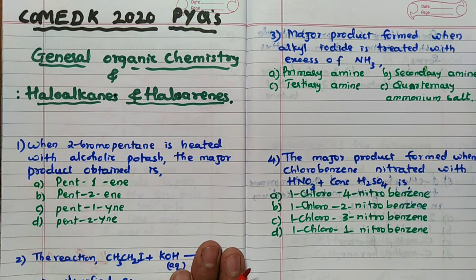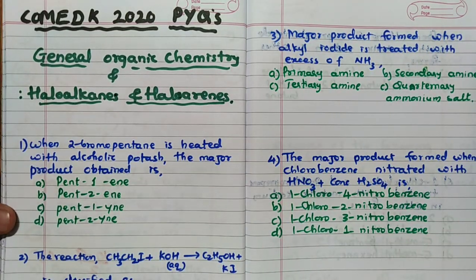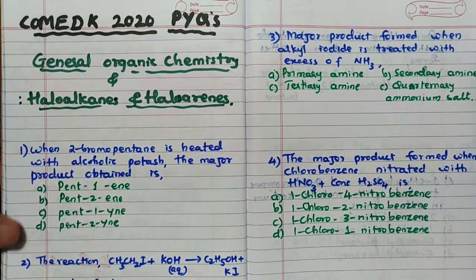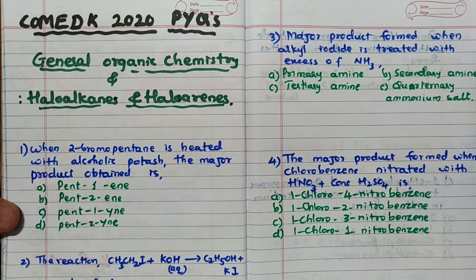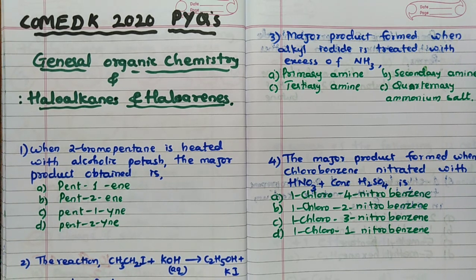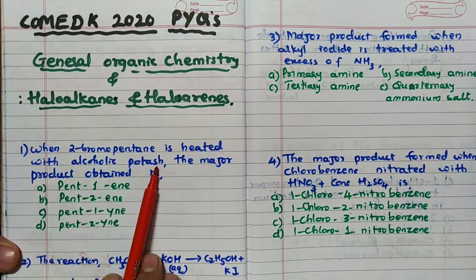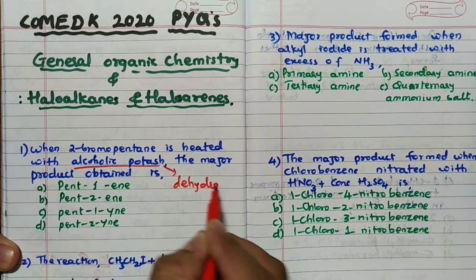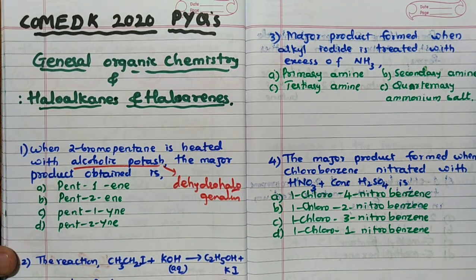Be ready for the whole class 11 and class 12 syllabus. Today in General Organic Chemistry and Haloalkanes and Haloarenes, this is KCET-level. If you prepare for this seriously, COMETK will be very easy. First question: when 2-bromopentane is heated with alcoholic potash — alcoholic KOH is a dehydrohalogenating agent.